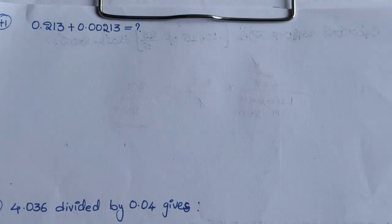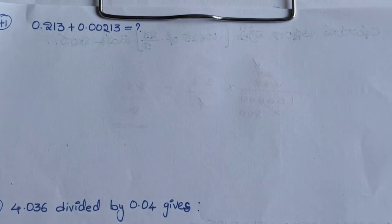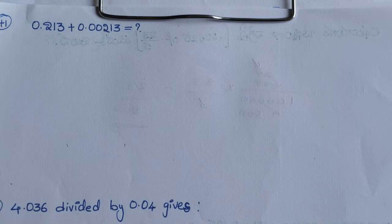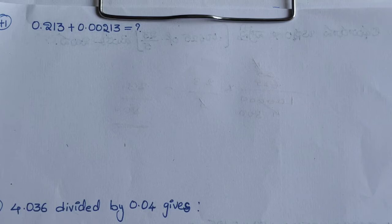Hi Friends, welcome to Raman Education Academy. This is the RS Aggarwal Question 41, Decimal Fractions. Question 41: 0.213 plus 0.00213 equals — what is the answer?